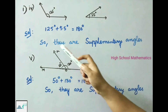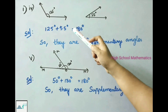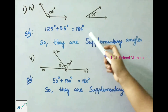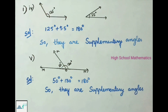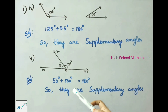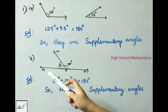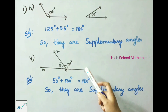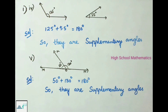Fourth pair: 125 degrees and 55 degrees — the sum of these two angles is 180 degrees, so they are supplementary angles. Fifth: angle MOK is 50 degrees and angle KON is 130 degrees — the sum of these two angles is 180 degrees, so they are supplementary angles.